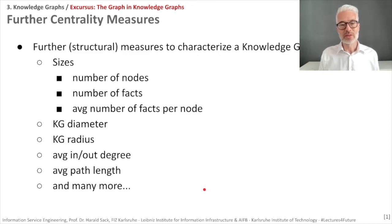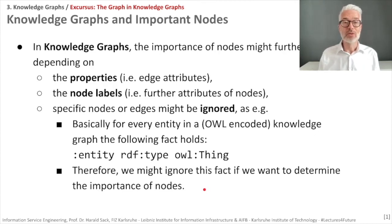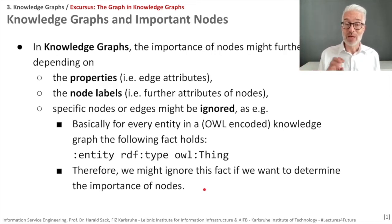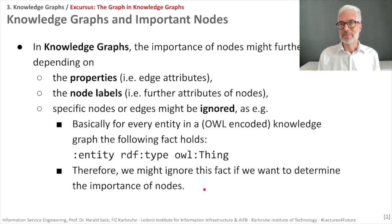Other useful measures include average in- and out-degree and average path length. When looking at node labels and specific facts, some should be ignored. For example, in any OWL-based knowledge graph, each entity typically has the type owl:Thing. If you create the transitive closure via a reasoner, every node points to owl:Thing, making it the most highly connected node. If you want meaningful statements about a graph's characteristics, these kinds of universal nodes should be removed from the analysis.